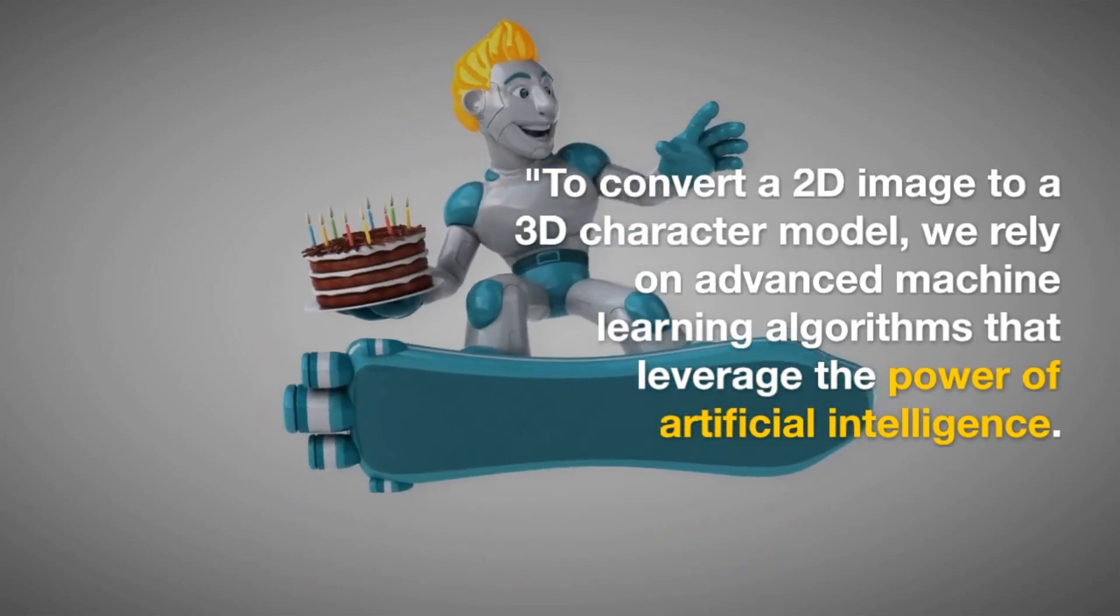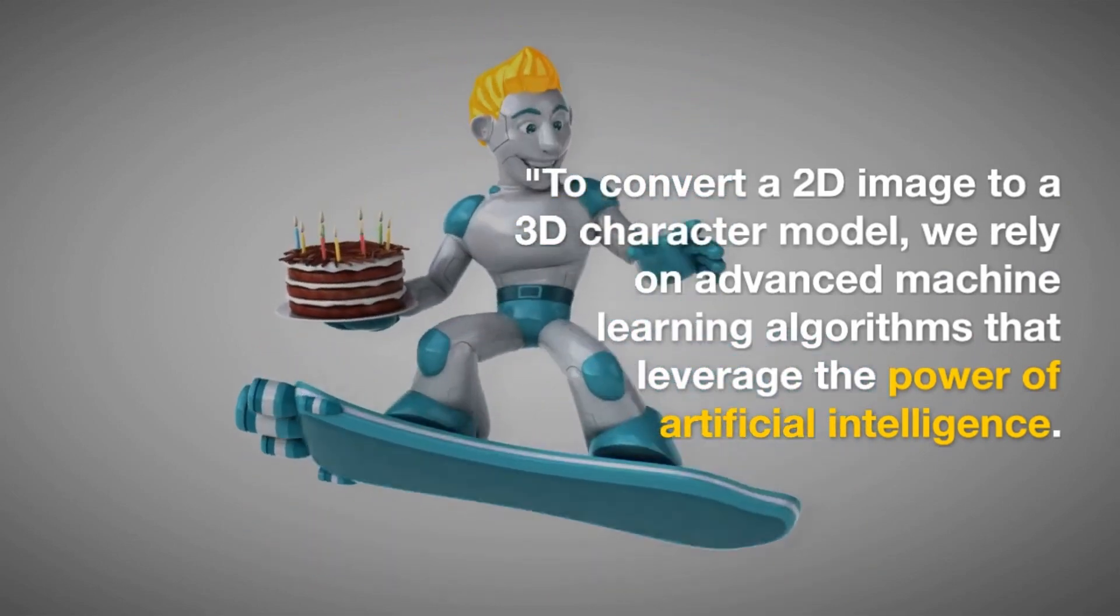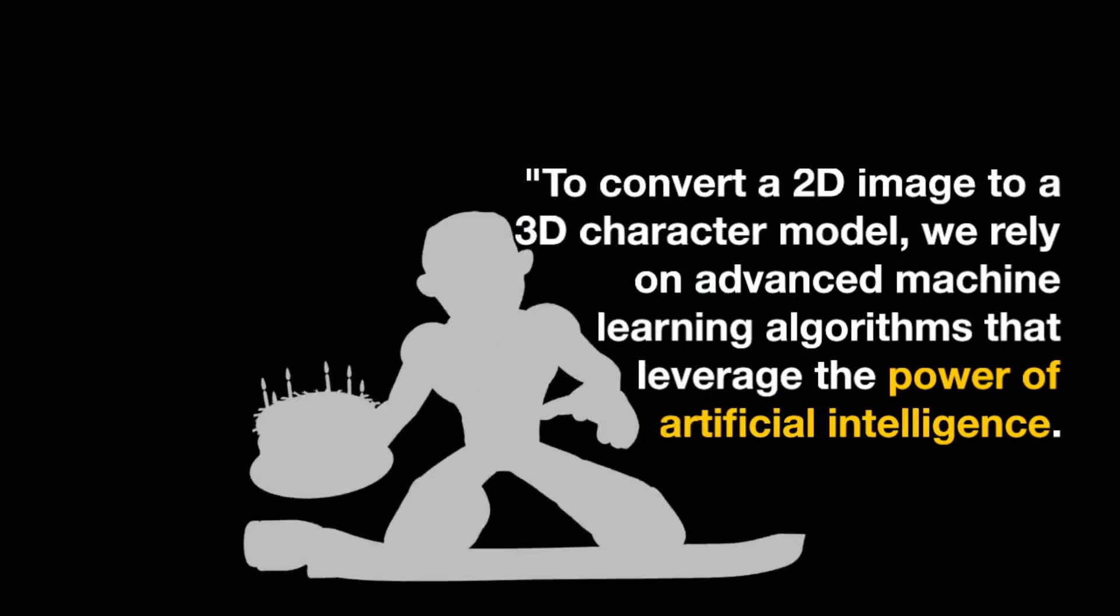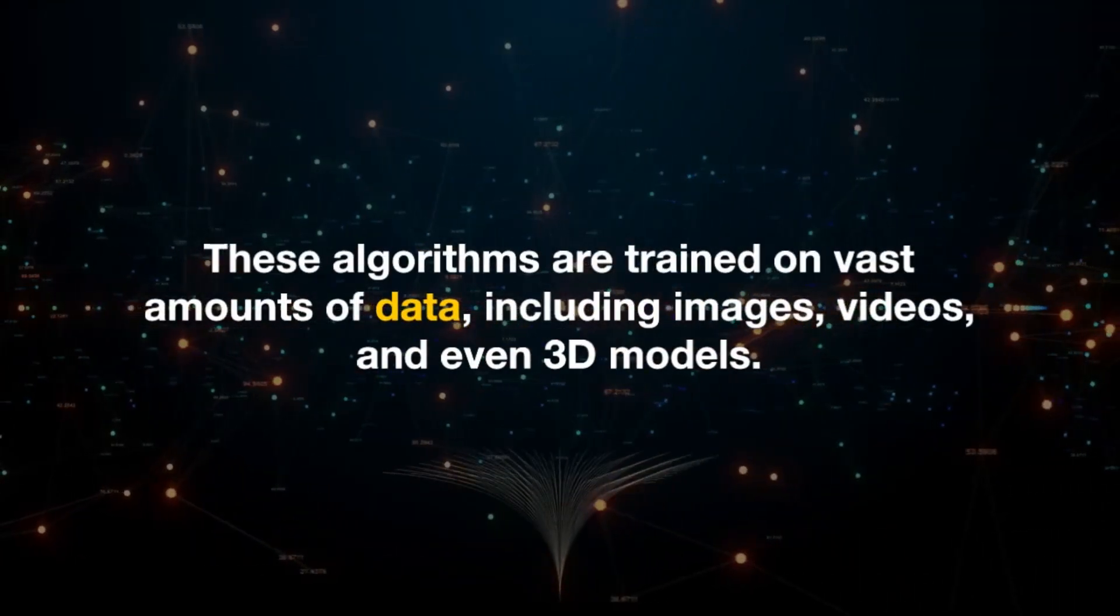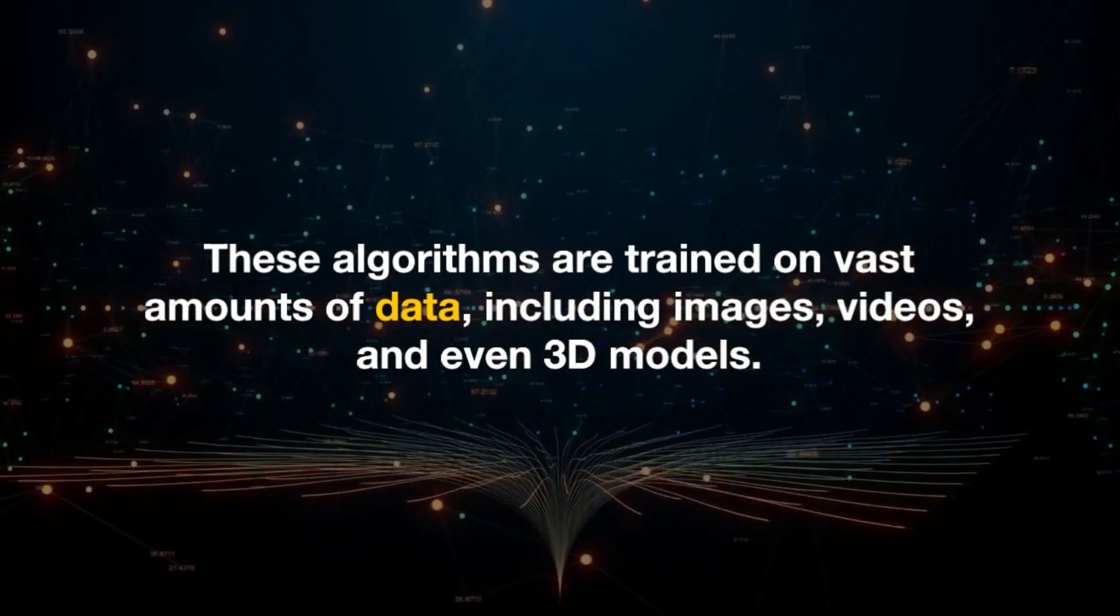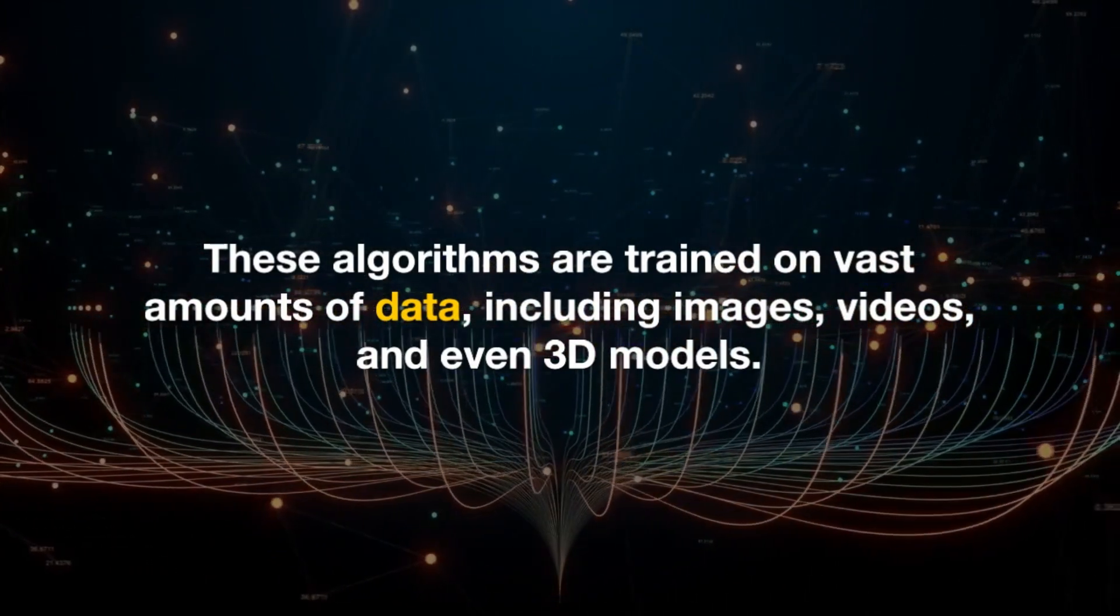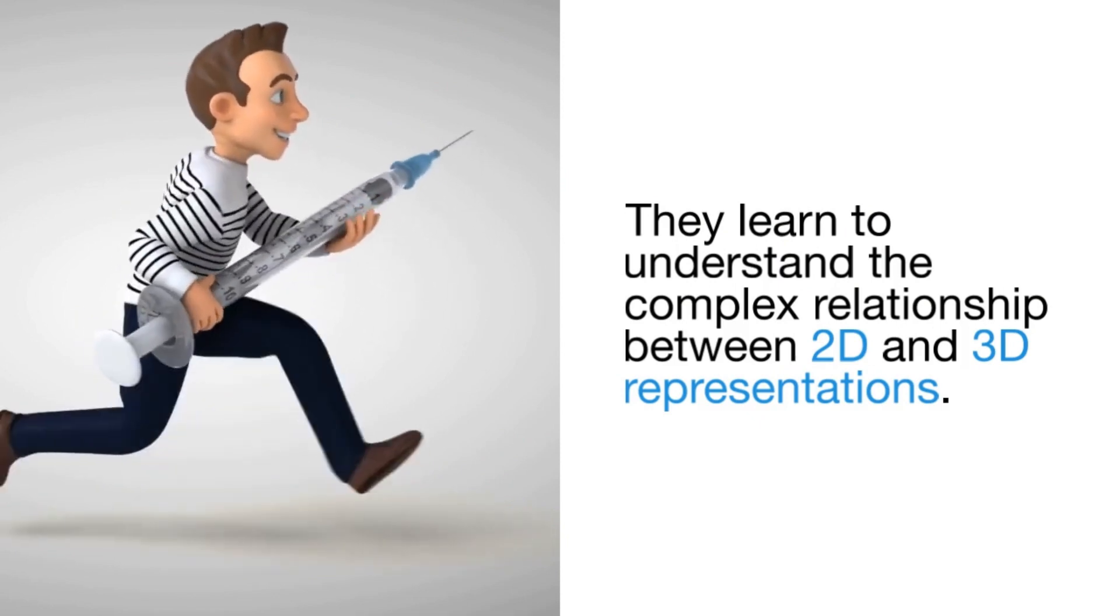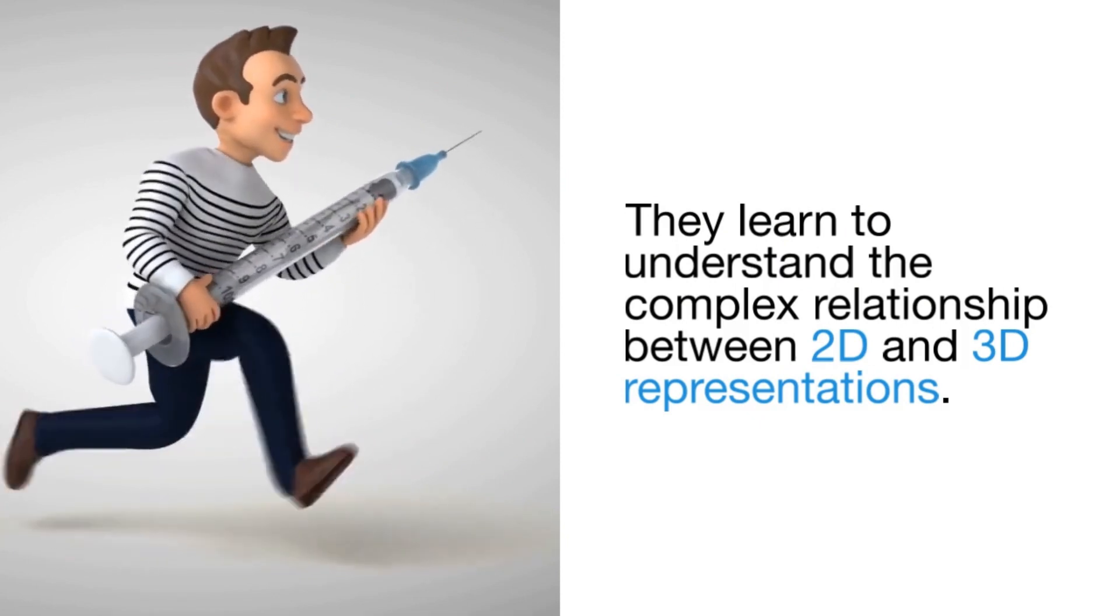To convert a 2D image to a 3D character model, we rely on advanced machine learning algorithms that leverage the power of artificial intelligence. These algorithms are trained on vast amounts of data, including images, videos, and even 3D models. They learn to understand the complex relationship between 2D and 3D representations.